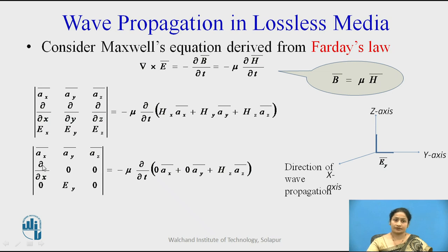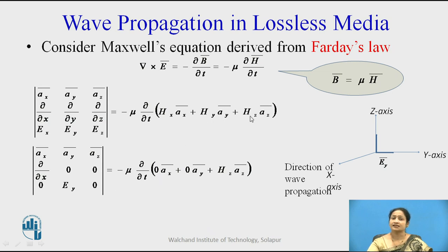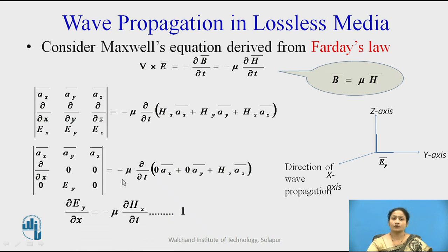Since the wave propagates along the x-axis, the ∂/∂x term will not be equal to zero, while ∂/∂y and ∂/∂z will be equal to zero. The electric field is assumed in the y-direction, so Ey is nonzero while Ex and Ez are zero. Similarly, the magnetic field is assumed in the z-direction, so Hz is nonzero while Hx and Hy are zero. Calculating and equating the a-z terms, we obtain equation 2.